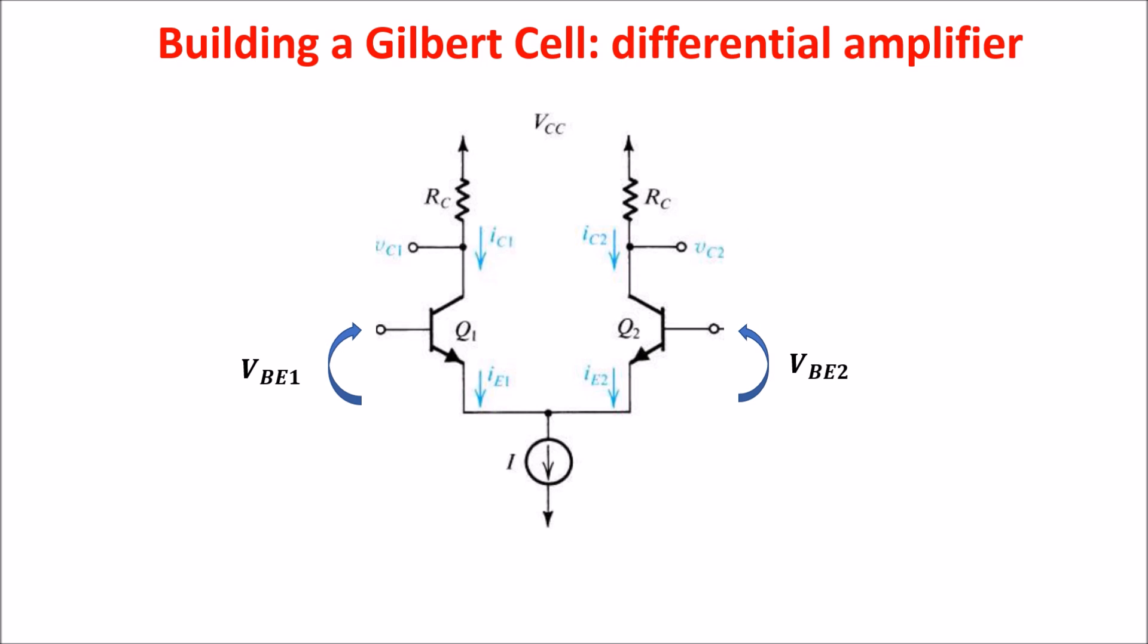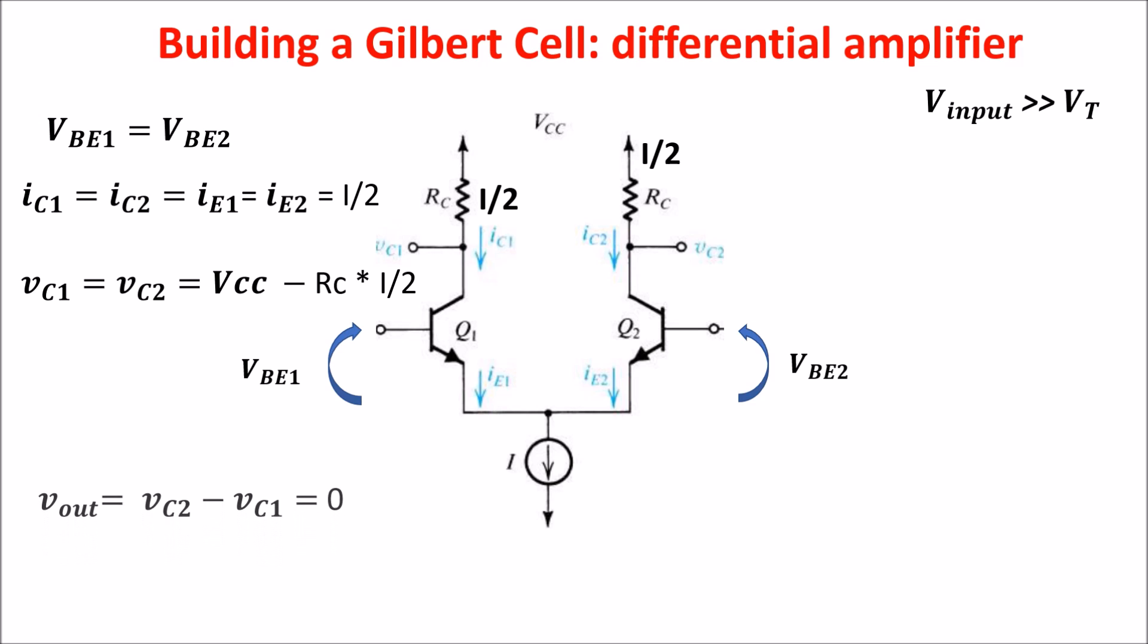The basic building block of the Gilbert cell is the differential amplifier. Let's remember the general working starting from the large signals. If V input is much larger than the thermal voltage VT and VBE1 equals VBE2, and the BJT Q1 and Q2 are matched, the tail current I is equally split in the two branches of the circuit, thus producing the same voltage drop on the two equal resistors RC. So the voltage Vout equals VC2 minus VC1 is equal to zero.